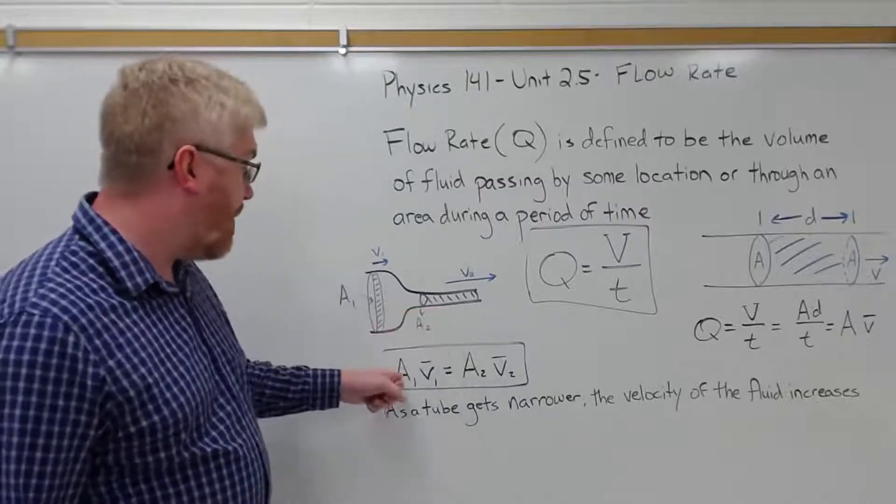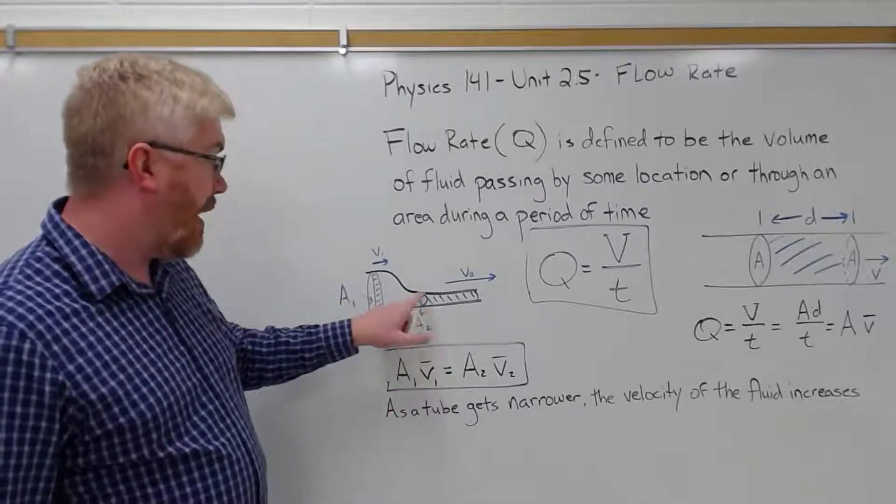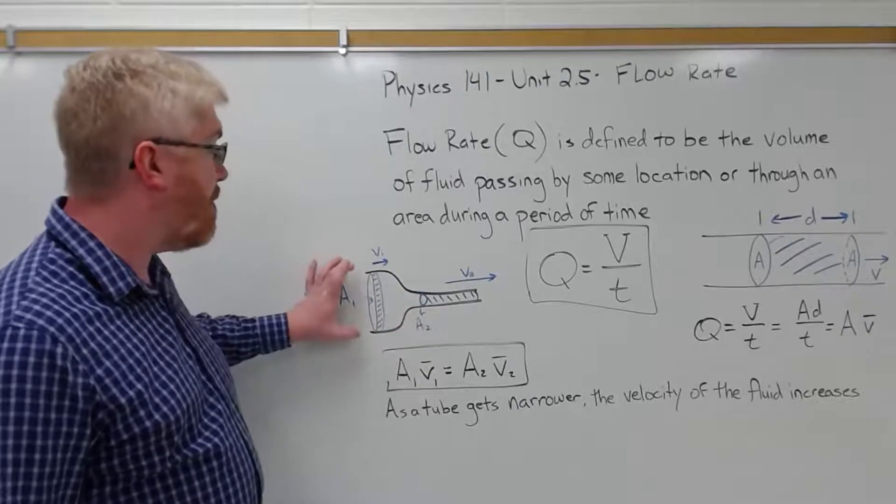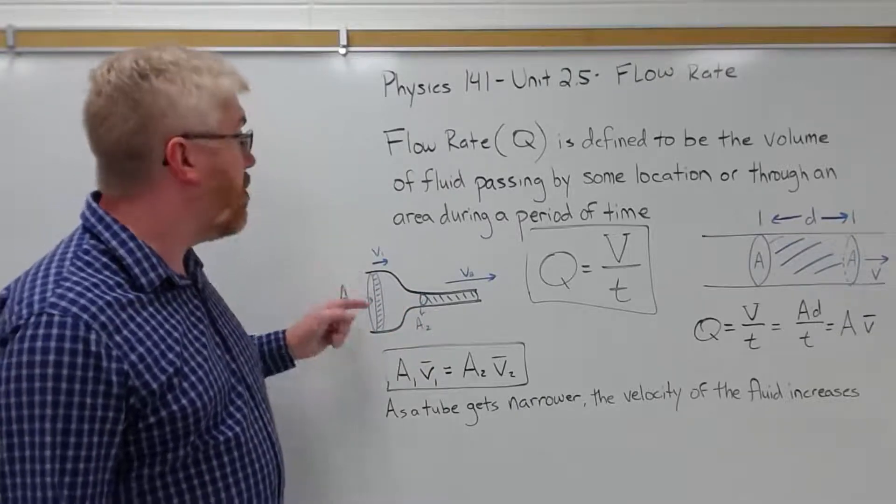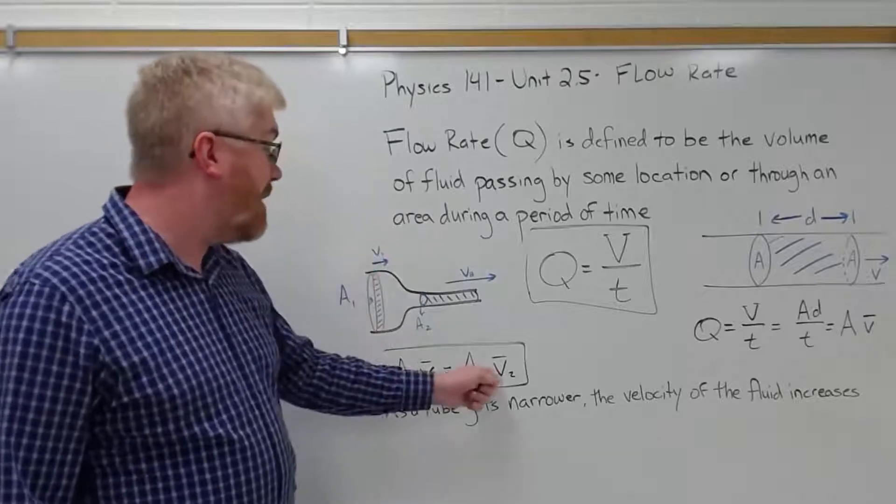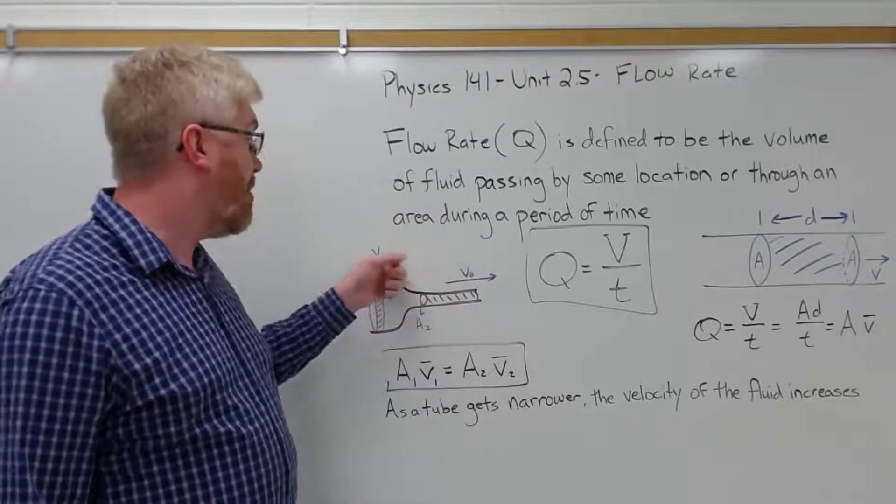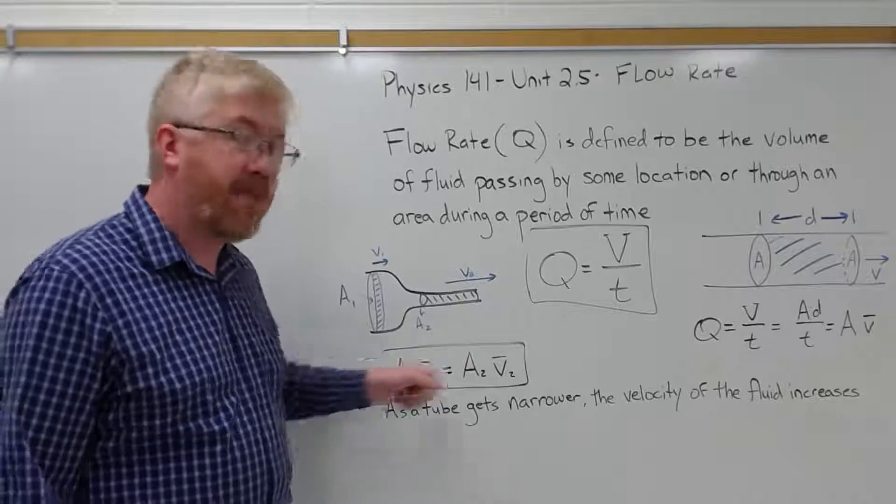The only way that's possible, it's very clear that A2, this cross sectional area here, is much smaller than the cross sectional area on the left. And the only way the volume flow rate can be maintained is if V2 is much larger than V1 for this equation to balance.